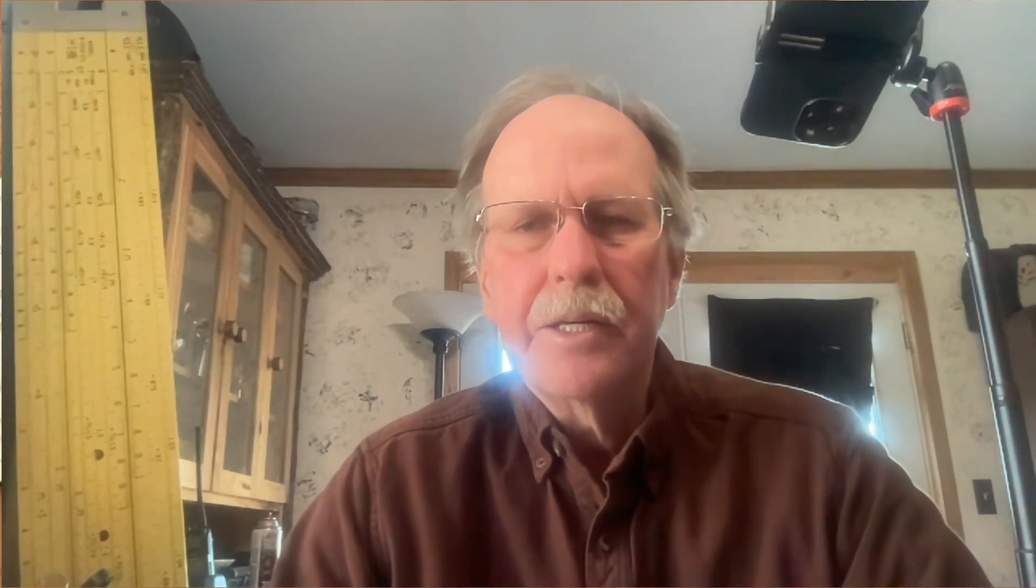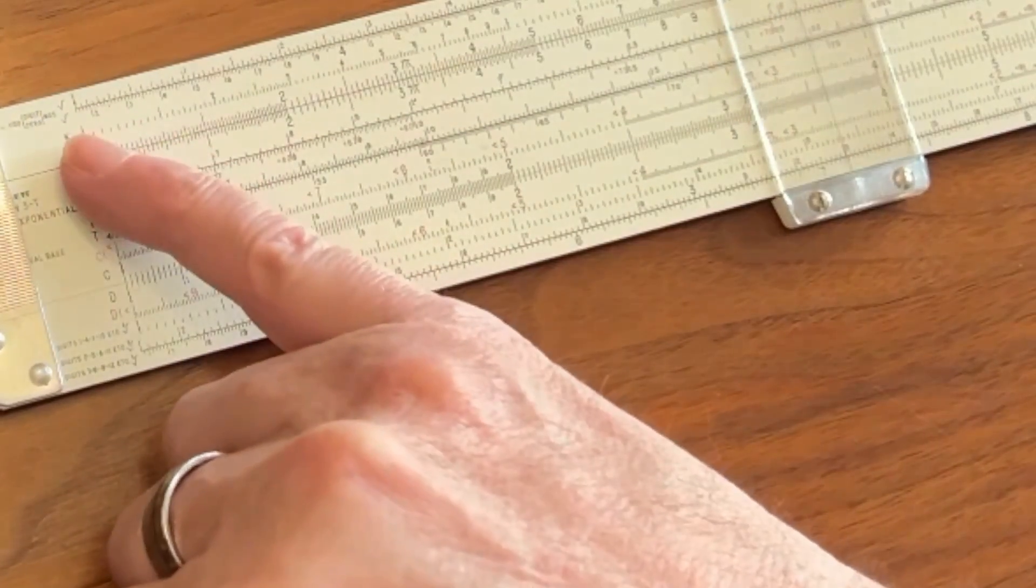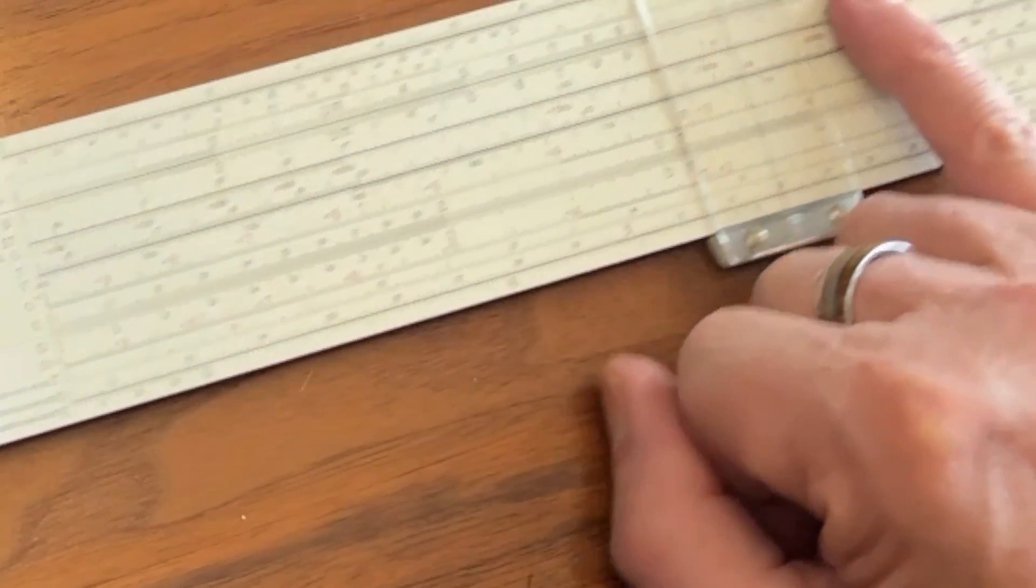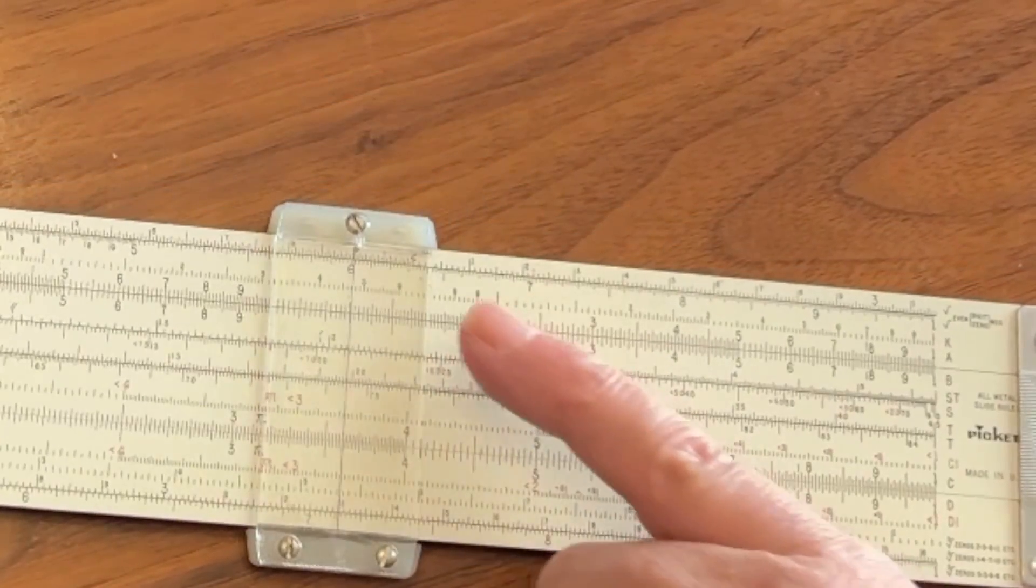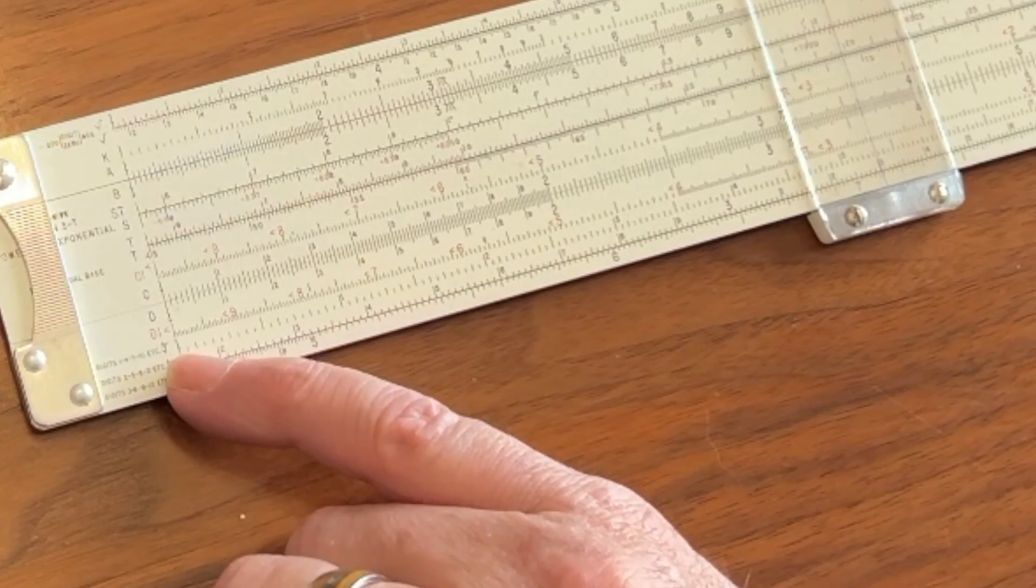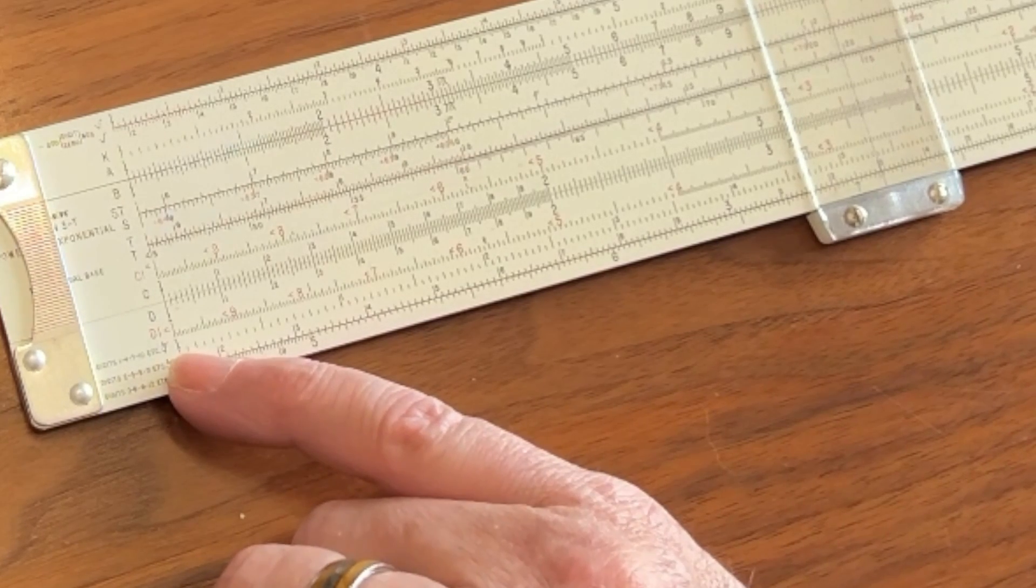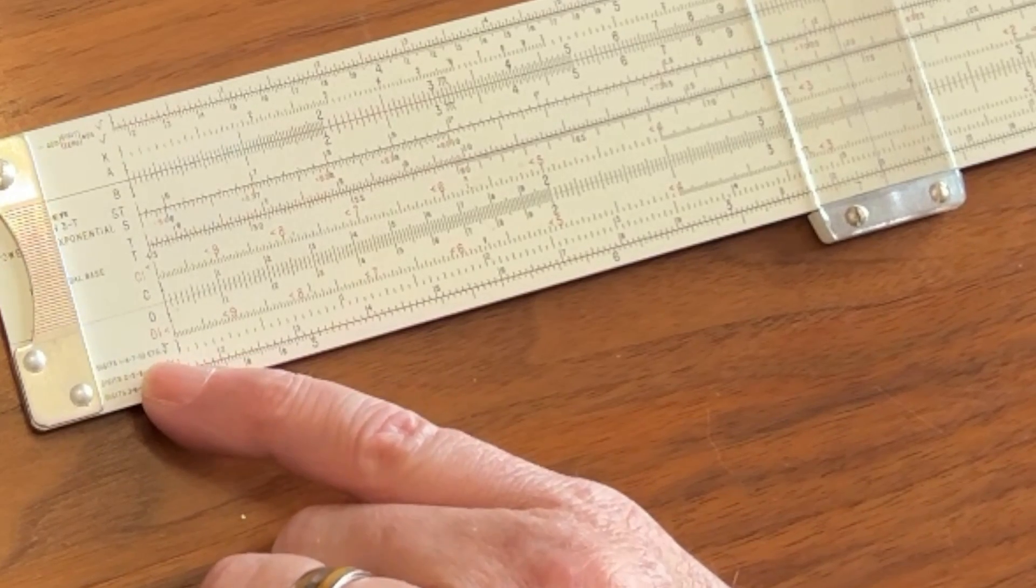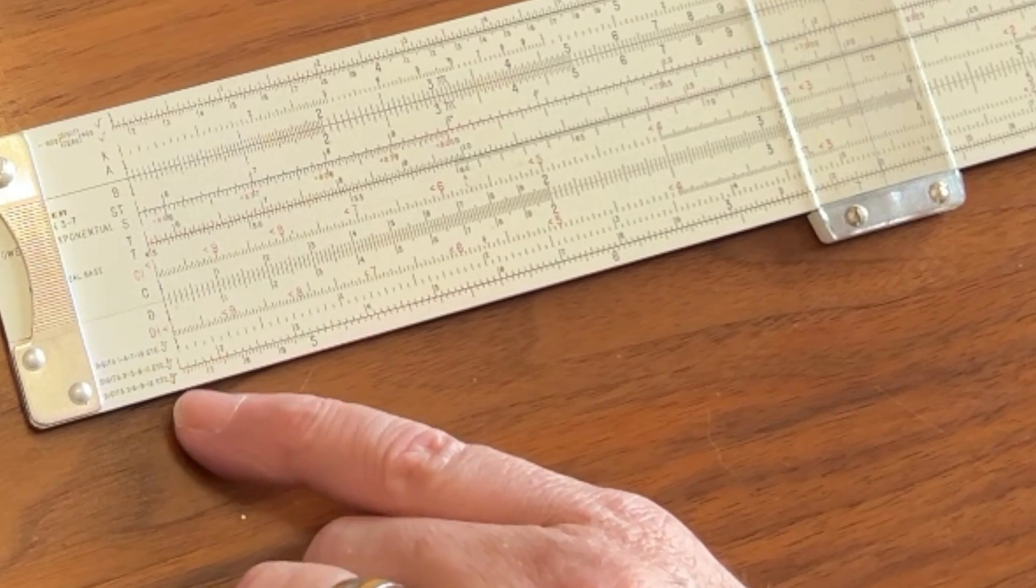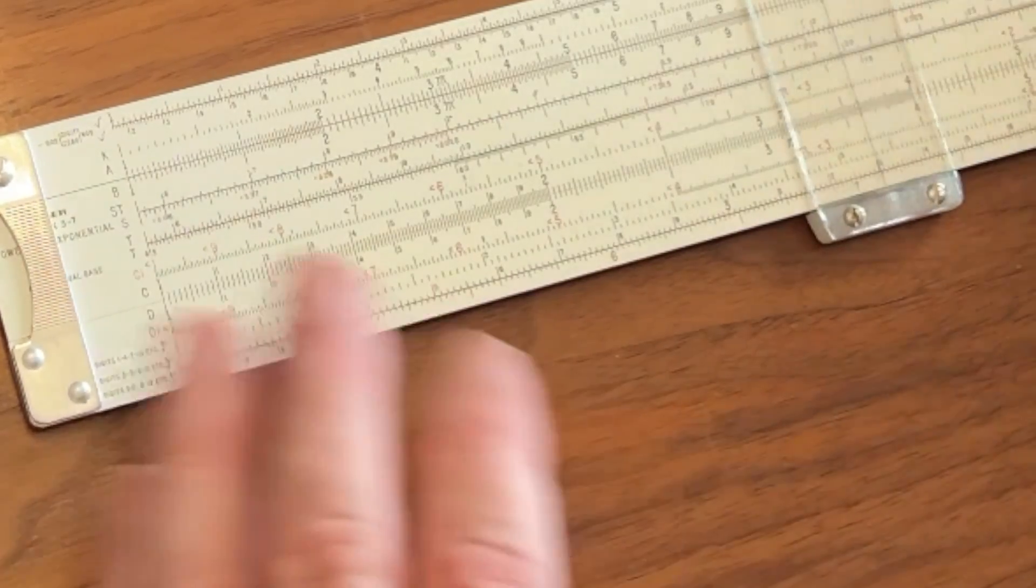You'll also notice down at the bottom, they do the same thing for the cube roots, because as you recall, the cube root, or the K scale, from 1 to 10, and then from 10 to 100, and then from 100 to 1,000. You would read them off starting at the top cube root scale, and that would give you the cube roots of numbers from 1 to 10. The middle scale will give you the cube roots of numbers between 10 and 100, and the bottom scale will give you the cube roots of numbers from 1 to 1,000.